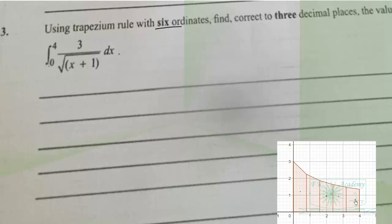These are the six ordinates we're talking about. So we need to find the height of these trapezia.